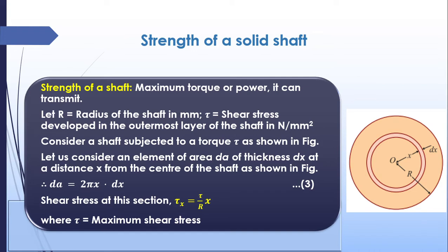Now we need to know the strength of a shaft. When stress increases beyond a limit, the shaft fails. Strength means the maximum force or torque it can bear. Here we apply a twisting force — that is a torque — so the strength of the shaft means the maximum torque or power it can transmit. We consider a circular cross section with center O, radius R, and a small ring of thickness dx at distance x from O.